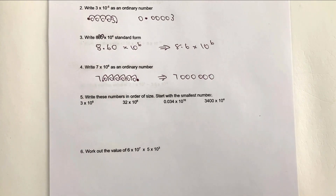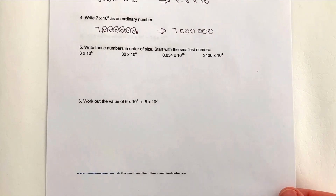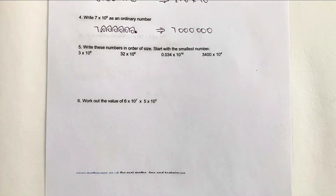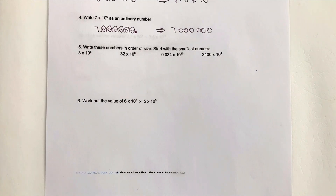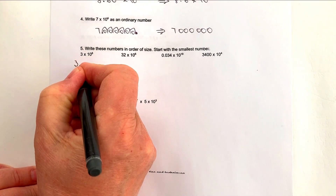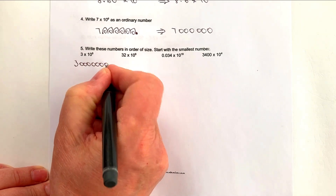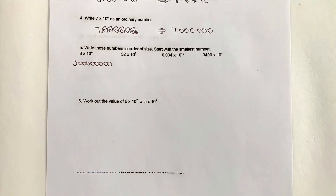Now question 5 — I've seen this type a couple of times on GCSE papers, so it's well worthwhile getting to grips with it. This is probably one of the more challenging questions. What I'd suggest is you look at each of these numbers and write them out in their full form. So 3 times 10 to the power of 8 is simply 3 with 8 zeros after it.